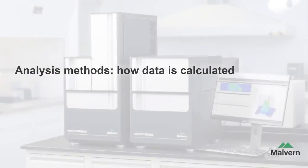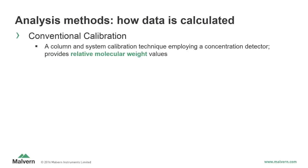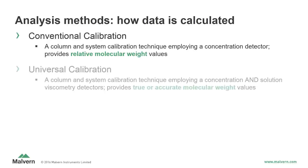So now let's take a look at the analysis methods, or how data is calculated. There are three main types of data analysis, each providing a different level of molecular characterization. The first analysis method is conventional calibration, which involves the use of a concentration detector to build a calibration curve with a series of standards. The sample is then measured against this calibration curve to provide relative molecular weight values. The second analysis method is universal calibration, which uses a concentration detector and a viscometer detector. The addition of the viscometer detector accounts for the difference in molecular size and shape between the standards and the sample, providing intrinsic viscosity and true or accurate molecular weight values.